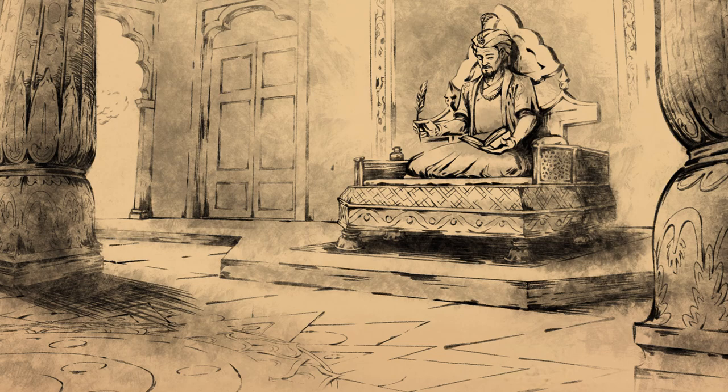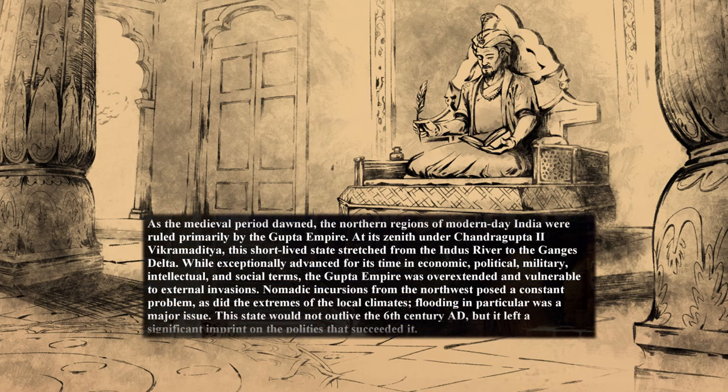As the medieval period dawned, the northern regions of modern day India were ruled primarily by the Gupta Empire. At its zenith, under Chandragupta II Vikramaditya, this state stretched from the Indus river to the Ganges delta. While exceptionally advanced for its time in economic, political, military, intellectual, and social terms, the Gupta Empire was overextended and vulnerable to external invasions. Nomadic incursions from the northwest posed a constant problem, as did the extremes of the local climates — flooding in particular was a major issue. This state would not outlive the 6th century AD.